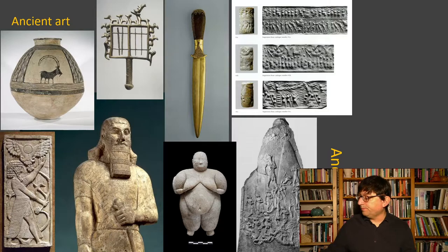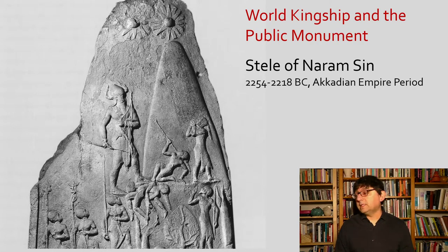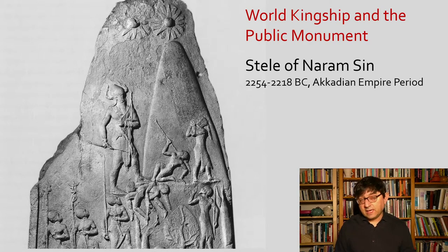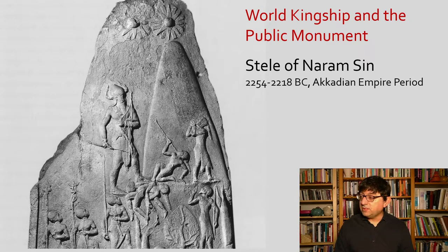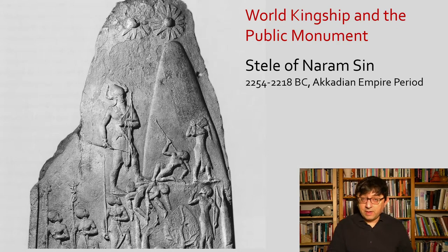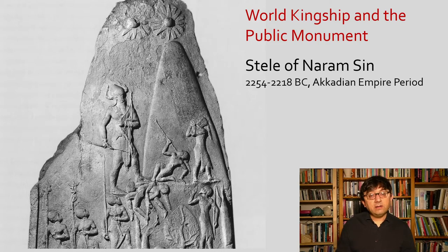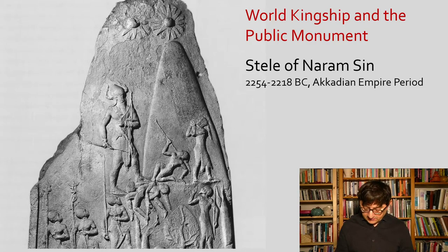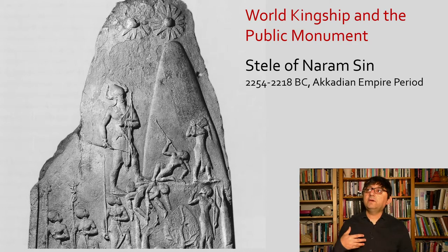Another example is the Stele of Naram-Sin from the Akkadian kingdom — one of the famous works of art we're going to focus on. Naram-Sin was an Akkadian ruler who lived in the third millennium BCE, and this stele with its inscription and imagery tells the story of a military expedition to the Zagros mountains and his victory over the Lulubi tribe, who are depicted here begging for their lives or being killed — a victorious, glorious representation, but also quite violent.